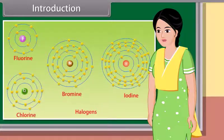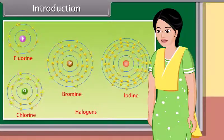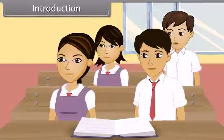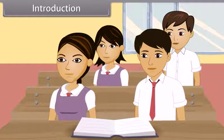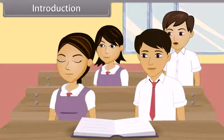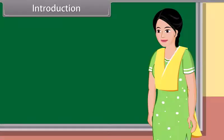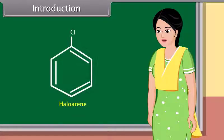Can anybody tell me what haloarenes are? Haloarenes are the molecules in which halogen atoms are bonded with carbon atoms that are a part of an aryl ring. Very good, Rohit. In this lesson we learn more about haloalkanes and haloarenes.